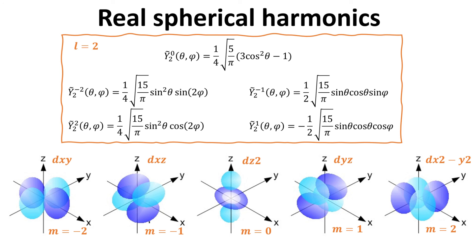For l equals to 2, we have five spherical harmonics. In this case, the shapes are more complicated. Let's look at the m equals minus 2 and plus 2 cases. These shapes consist of four lobes, lying on the xy plane. For m equals minus 1 and plus 1, these four lobes lie on the xz and yz plane respectively. These spherical harmonics are often denoted as the d orbitals.